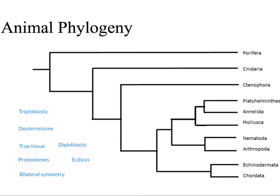In the next lessons we are going to learn more about these phyla of animals. For now I want to show you how clearly and easily these animal traits fall onto a phylogenetic tree. Our outgroup here is the Porifera, the sponges. These animals do not have true tissue, which means we can add the trait true tissues on the tree in this location.